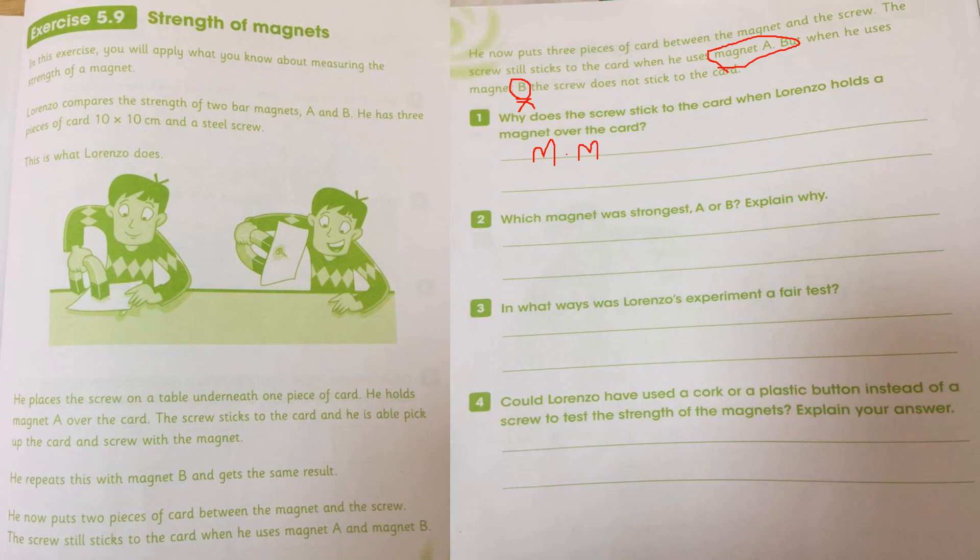Which magnet was stronger, A or B? It's A. Why? Because in the three cardboard sheets, it will attract the screw. So that's why we said A is the strongest one because with the three layers of the cardboard sheet, it will attract the screw.